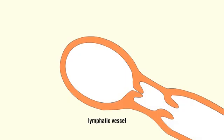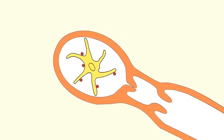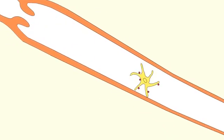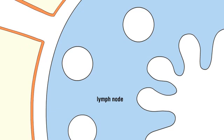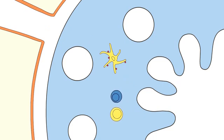The migrating dendritic cells enter the lymphatic vessels and are collected in a draining lymph node. In the lymph node, T cells are activated by antigen presented by the dendritic cells, and in turn activate B cells to secrete antibody.